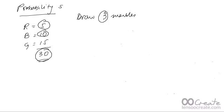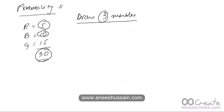Now I'm going to give you a question to try using the second method. You have the same data and you draw three marbles at random without replacement. The question asks: what is the probability that you get one red, one blue, and one green marble in any order? The order is irrelevant, so use the combinations method. Pause the video here, solve it on your own, then play it to see the solution.